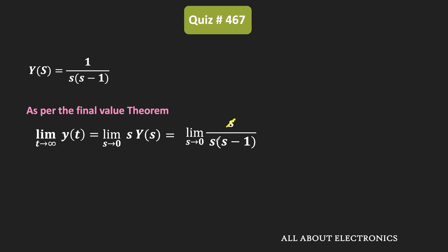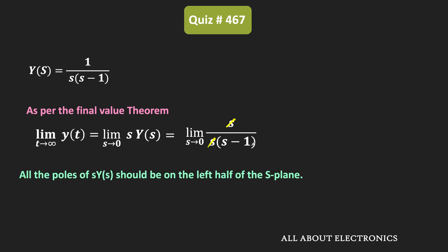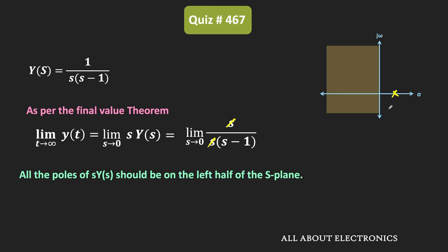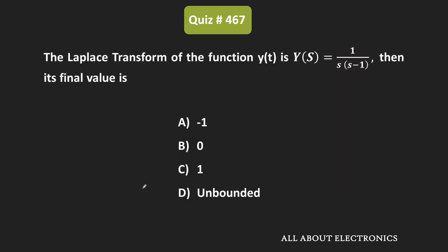Here, these two s terms cancel, so s·Y(s) = 1/(s−1). We need to check whether s·Y(s) satisfies the final value theorem condition — all poles must be on the left half of the s-plane. But the pole is at s = +1, which is on the right-hand side. Therefore, we cannot apply the final value theorem, and the final value cannot be determined from this Laplace transform. Option d is the correct answer.